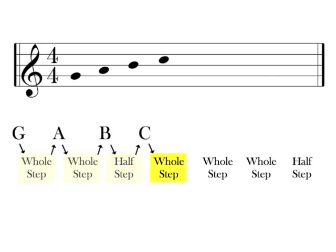A whole step from C is D. A whole step from D is E. The next note needs to be a whole step from E. Knowing that E and F are half steps apart, a whole step from E would then be F sharp. Finally, a half step from F sharp is G.